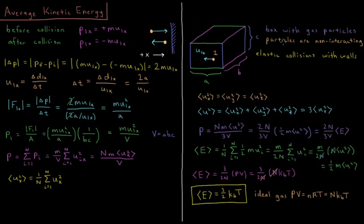The particles are non-interacting, and they are going to undergo elastic collisions with the wall. If we look at an individual particle and its velocity just in the X direction, we have U₁ₓ for the velocity of particle 1 in the X direction.